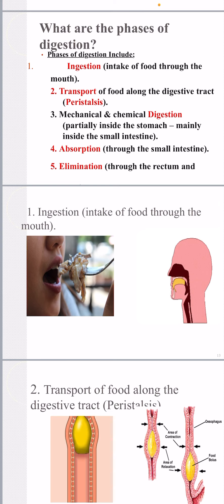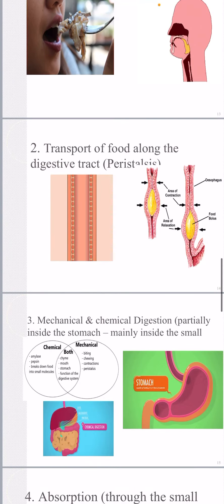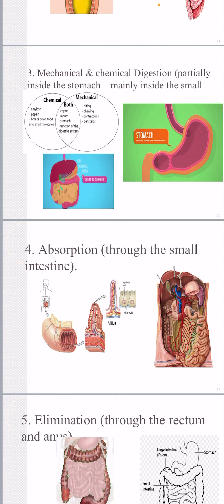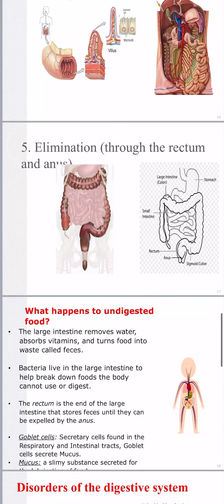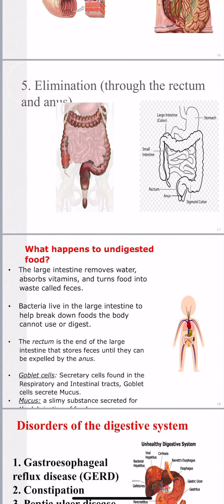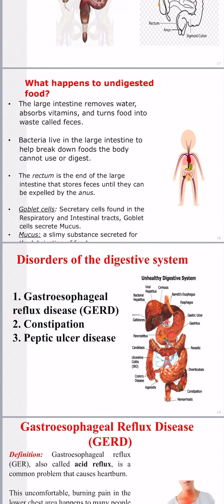To summarize the phases: ingestion is intake of food through the mouth; transport moves food along the esophagus via peristalsis; mechanical and chemical digestion occurs in the stomach and small intestine; absorption happens in the small intestine where nutrients and vitamins pass into the blood; and elimination expels unwanted material from the body. The large intestine removes water, absorbs vitamins, and turns food into waste called feces.